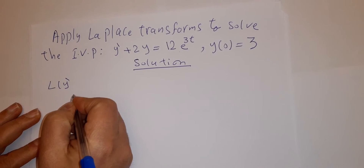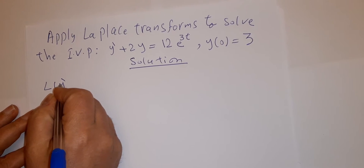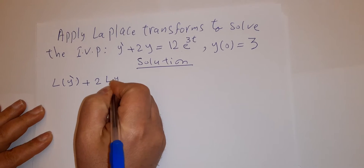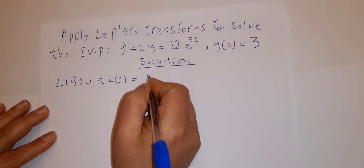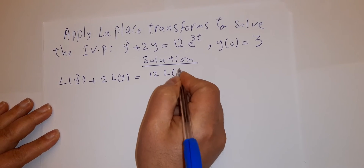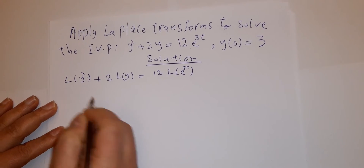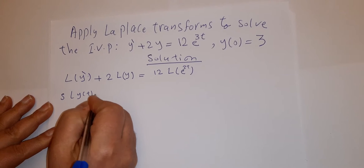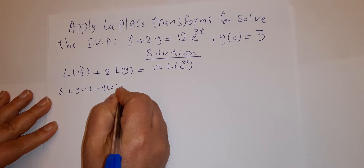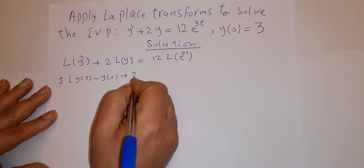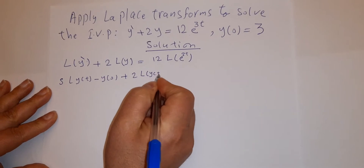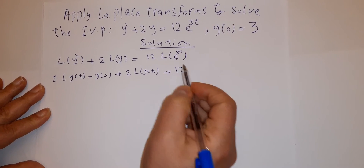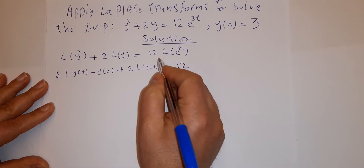First of all, we have to apply Laplace transforms to each term. So we write L{y'} plus 2·L{y} equals 12·L{e^(3t)}. As you know, L{y'} equals s·L{y(t)} minus y(0), and here we have 2·L{y(t)}. From the table of Laplace transforms, L{e^(3t)} equals 1/(s−3).